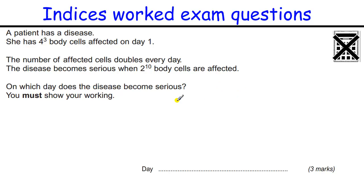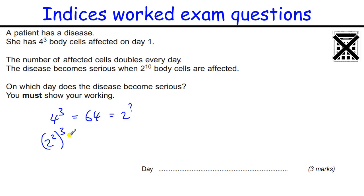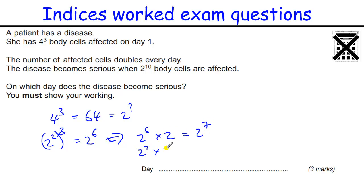A patient has a disease with 4 cubed cells on day 1. Replace 4 with 2 squared: 2 squared to the power of 3 equals 2 to the 6. So 4 cubed is 2 to the 6. To reach 2 to the 10 (the serious threshold), each doubling adds one to the power: from 2⁶ to 2⁷, 2⁸, 2⁹, 2¹⁰. That's 4 doublings, so 4 days.